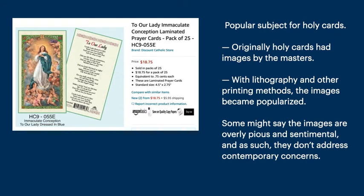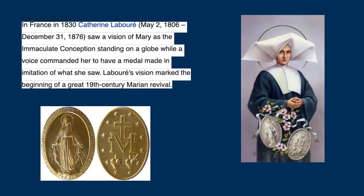We see the subject often in holy cards. At first, the holy cards were images from the masters. Then, with lithography and other printing methods, the images became popularized, and some might say the images are overly pious and sentimental. In France in 1830, Catherine Labouré saw a vision of Mary as the Immaculate Conception standing on a globe, while a voice commanded her to have a medal made in imitation of what she saw. The popularity of this medal spread throughout the world, and it was really the beginning of the 19th century Marian revival.